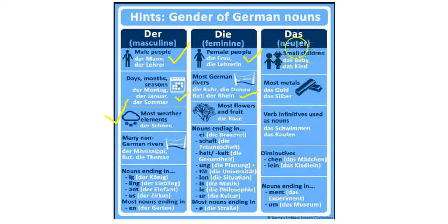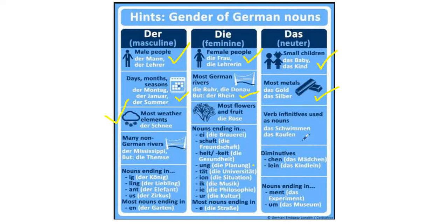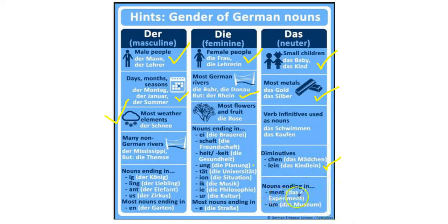For neuter nouns: anything diminutive is das — not because of -schen specifically, but diminutives in general. Infinitives used as nouns are also das — like the verb kaufen means 'to buy,' but das Kaufen means 'buying,' like a gerund. Mädchen is diminutive — small, little — so it's das. Same with Kindlein, Liebchen, Fräulein. Nouns ending in -ment or -um are also neuter: das Experiment, das Museum.